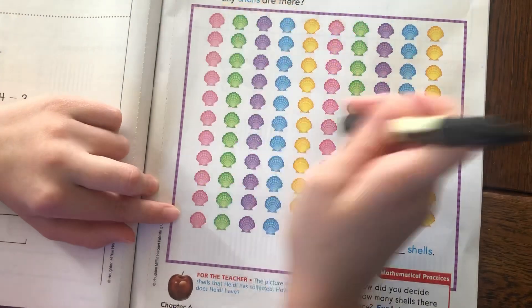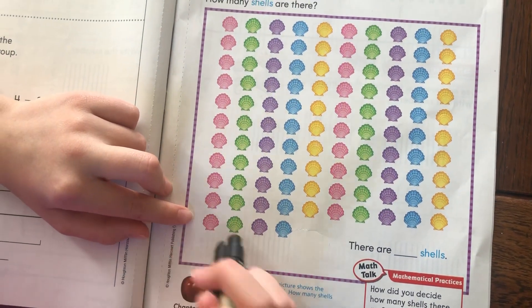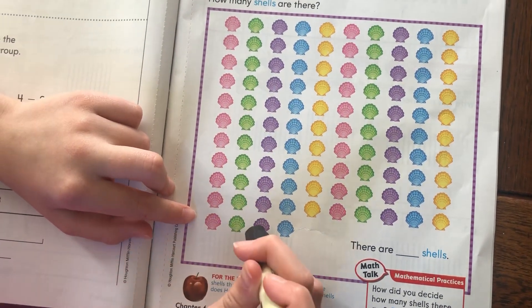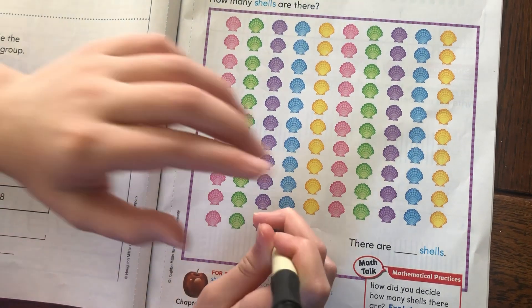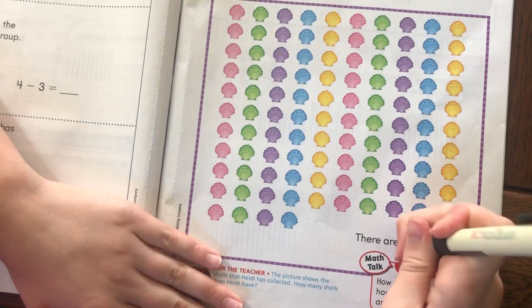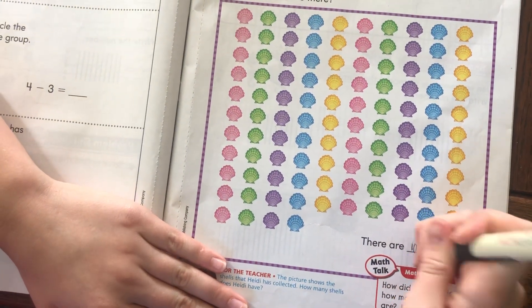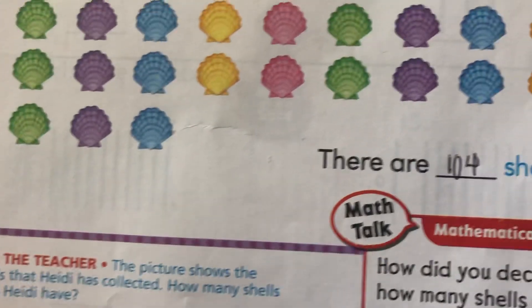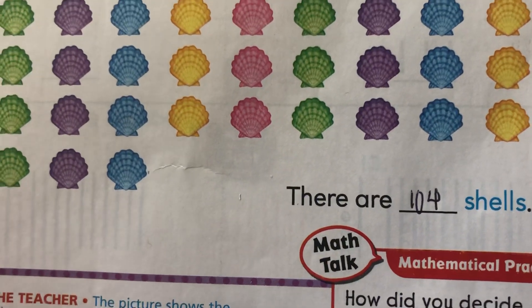So, we know that there's 100 in every place but these last four shells. So, how about we count those? So, 100, 101, 102, 103, and 104. So, right here, we put 104. And then, let me see, 104 is 104.